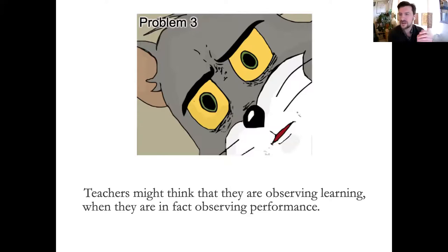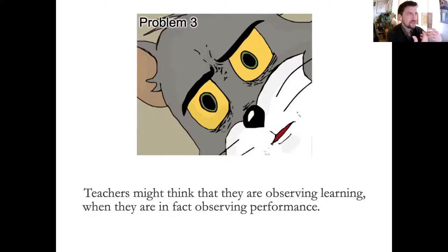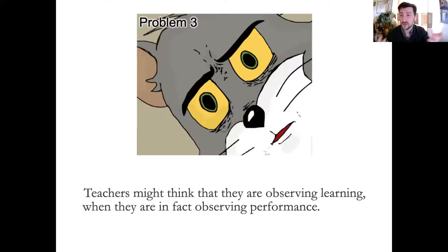Teachers might observe performance and think they are observing learning, and they might avoid things like interleaving because learners seem to find it confusing. There's also an interesting point that real life is interleaved — we've evolved over millions of years in an environment where things weren't neatly categorized. Our brains are set up to learn by categorizing things that come at us in a chaotic way. But in education we often neatly simplify material into topics, and perhaps by doing so we're actually making long-term retention harder.